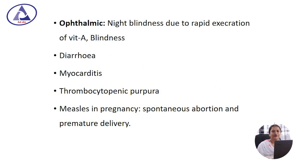Ophthalmic complications: night blindness may occur due to rapid excretion of vitamin A, which may progress to complete blindness. Diarrhea may also occur. Myocarditis and thrombocytopenic purpura are rare complications of measles virus infection.